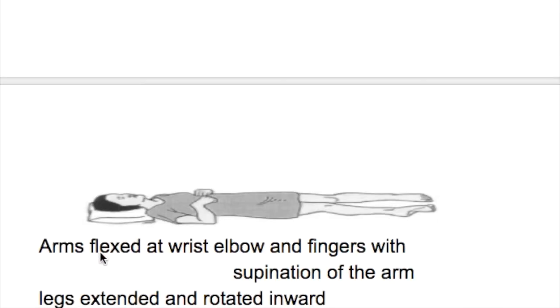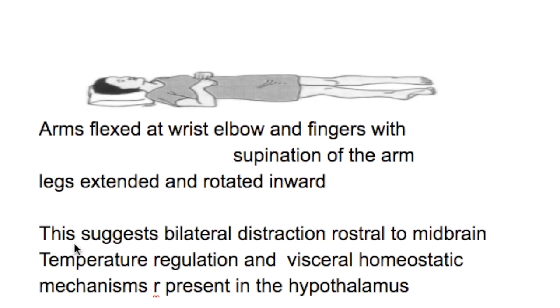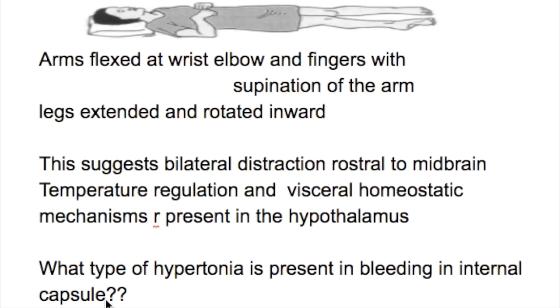The features of decorticate rigidity are: arms are flexed at wrist and elbow and fingers with supination of the arm, and legs are extended and rotated inwards. This suggests bilateral destruction rostral to the midbrain.